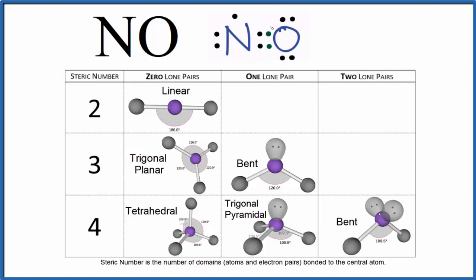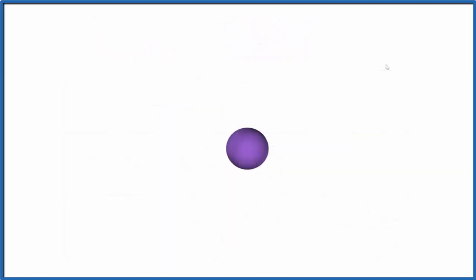Remember that we have a double bond here. So let's say the purple is the nitrogen, and then we have that double bonded oxygen. We end up with a linear molecular geometry.